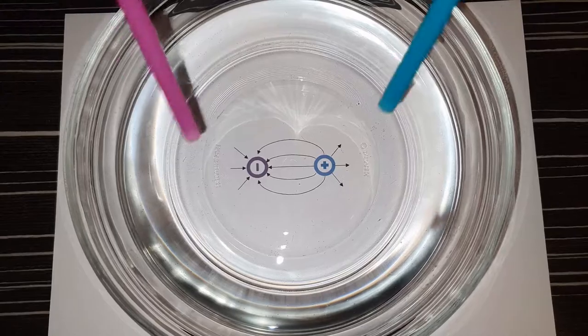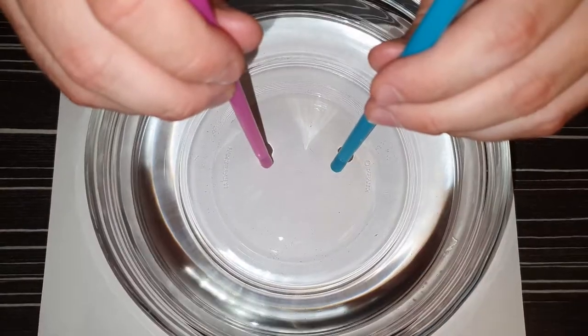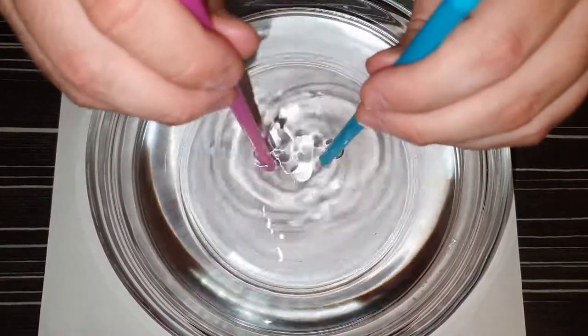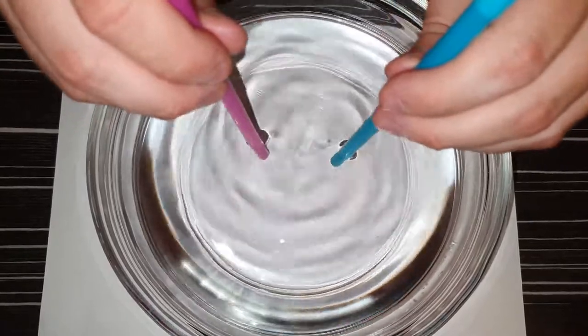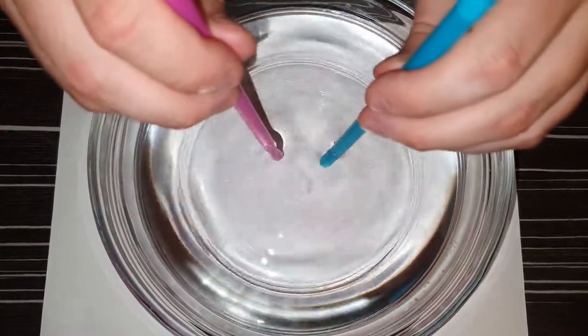Now, let's replace them with straws. If we oscillate positive and negative charges, we can see that electric waves are created. Note that a magnetic field is automatically generated perpendicular to it.